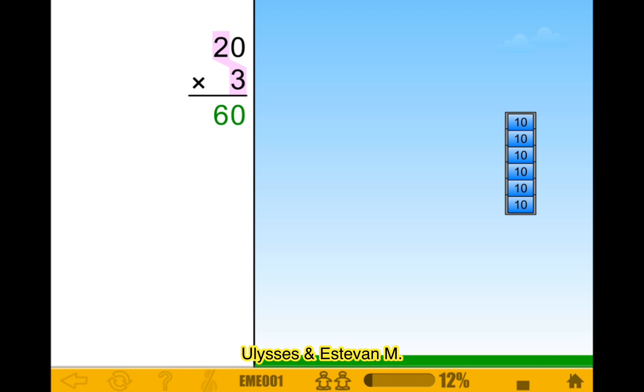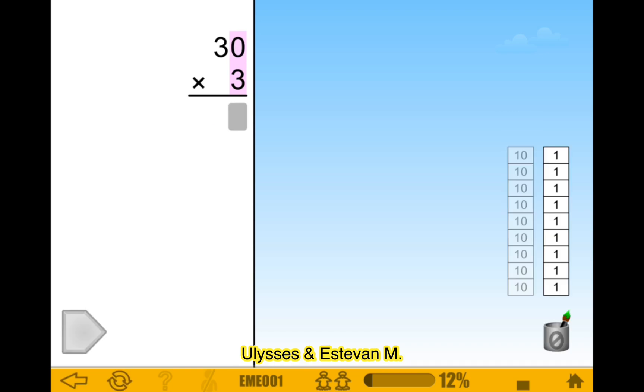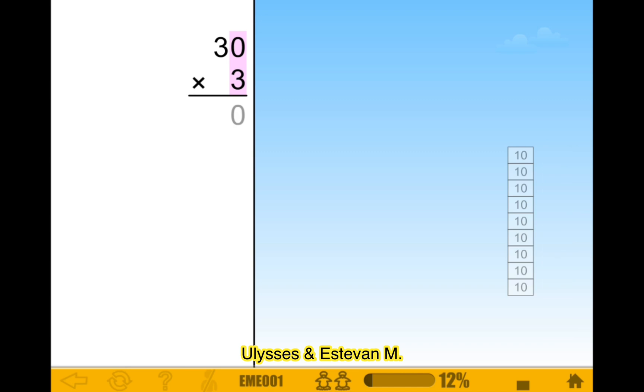Easy. 20 times three is 16. Okay, this one's easy. This is zero.